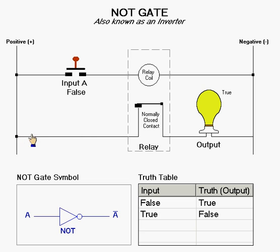As you can see, power then flows through the relay contact, energizing the light bulb, representing the output of true.